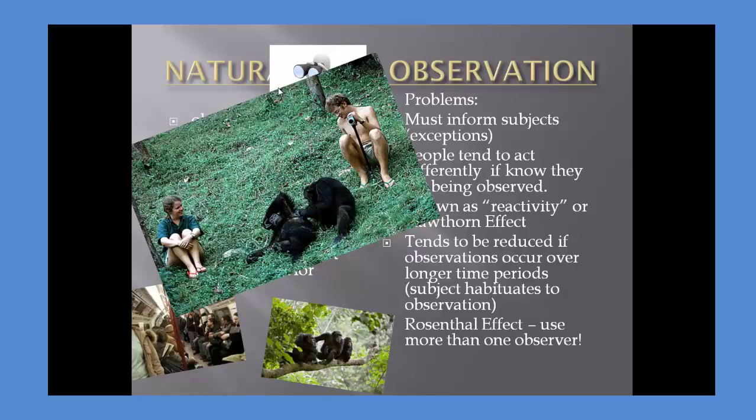Also, we can reduce the Rosenthal effect or experimenter bias if we use more than one observer. I might be biased in a certain way, but another observer isn't. So, when we combine our data together, we can kind of get rid of those biases.